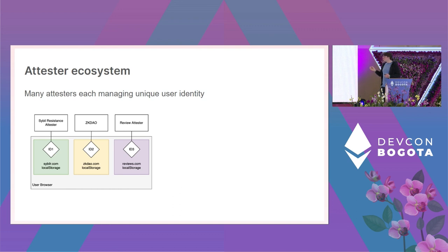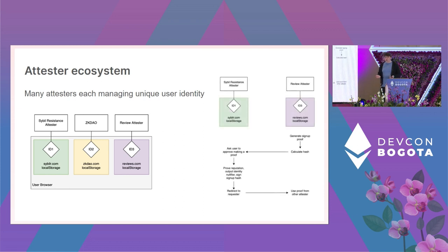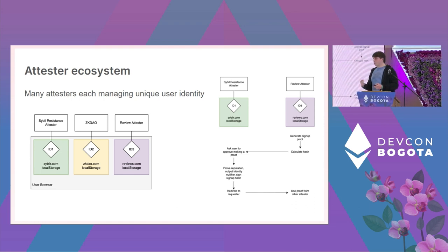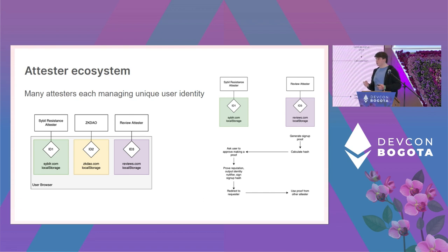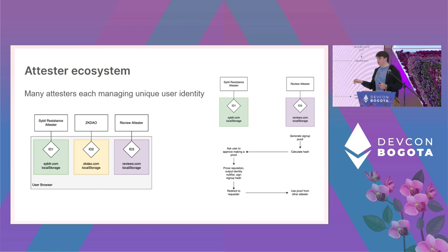At the same time, we want attesters to be interoperable — essentially OAuth for ZK. For example, if a review attester wants a proof from a Sybil resistance attester to confirm you're human, the flow would be: create a signup proof for the review attester, get redirected to the Sybil resistance attester, and get prompted to make a reputation proof from that identity. The user approves, proves they have the reputation, signs the hash of the signup proof to confirm they're the same person, then gets redirected back to complete signup.